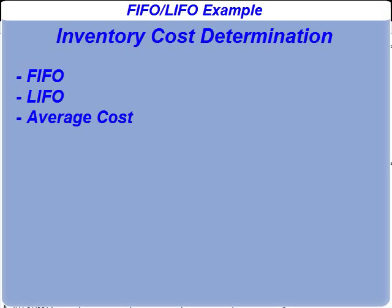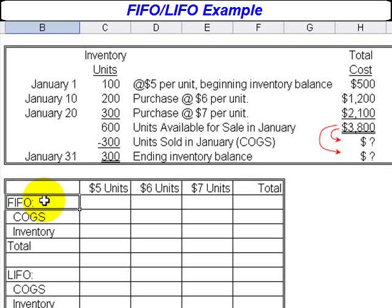We have three different approaches to answer that question. One is called FIFO, which stands for First In, First Out. Under the FIFO method, the units sold are assumed to be the first ones that were available for sale.